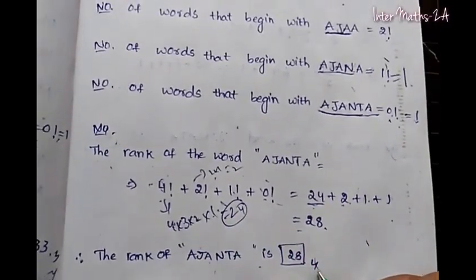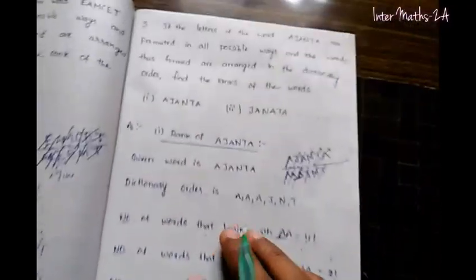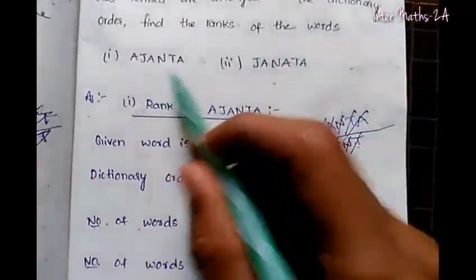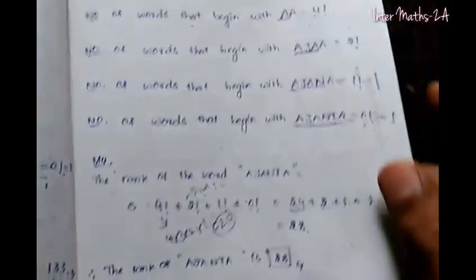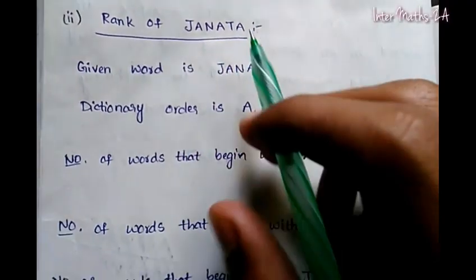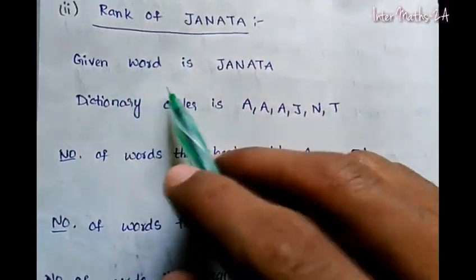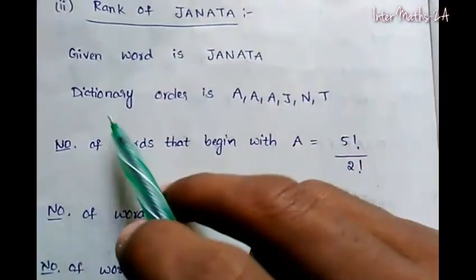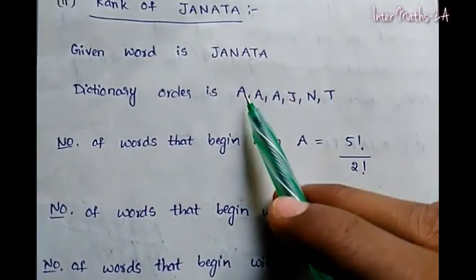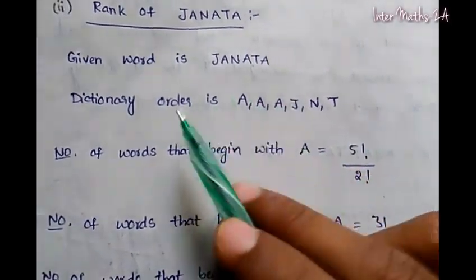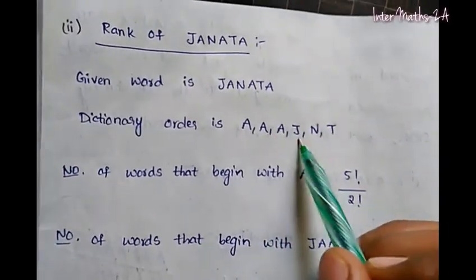So the rank of AJANTA is 28. Now we move to the second part. The given word is JANATHA — J-A-N-A-T-A. The dictionary order of its letters is A-A-A-J-N-T.